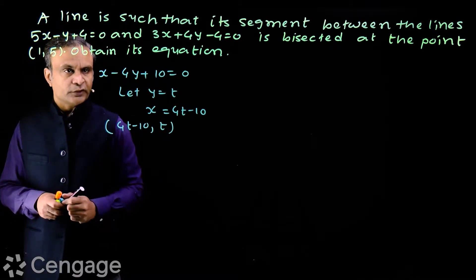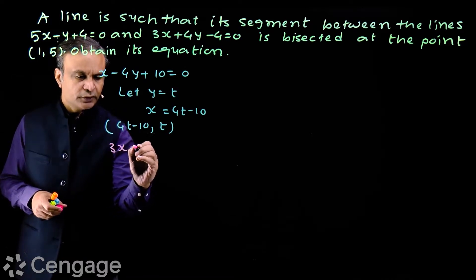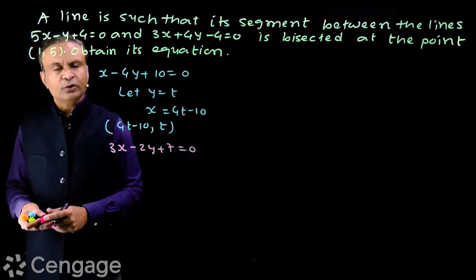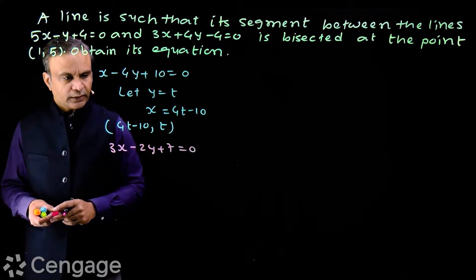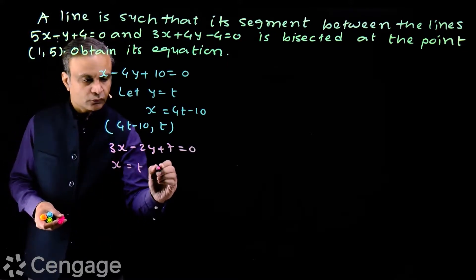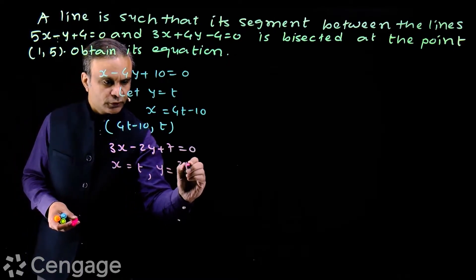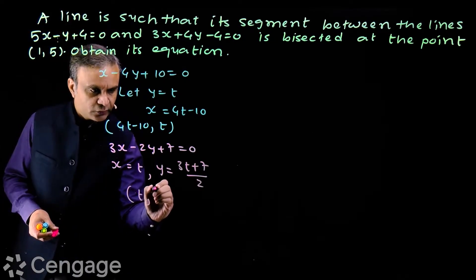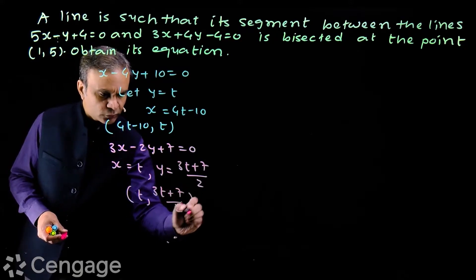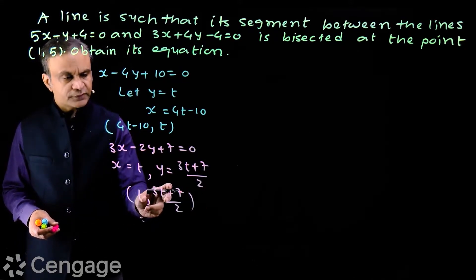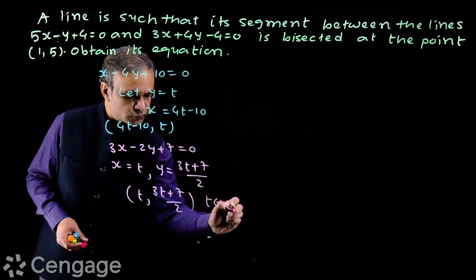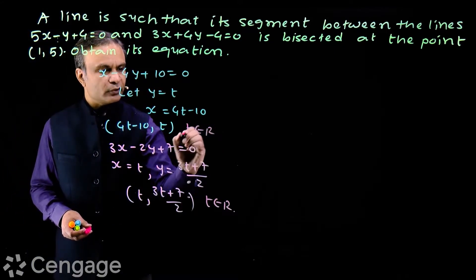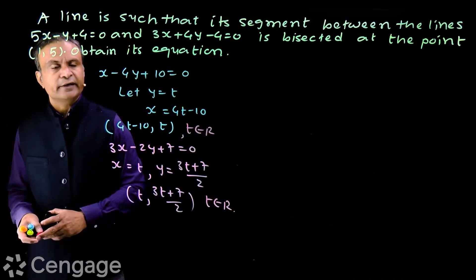If we have the equation of a line like 3x minus 2y plus 7 is equal to 0, then we can let either x equal to t or y equal to t. If we let x equal to t, then the value of y will be (3t plus 7) upon 2. So the coordinates of the variable point on the line will be (t, (3t+7)/2). Points with these coordinates always lie on their respective straight lines for all t belonging to R. This is how we consider a variable point on a straight line.